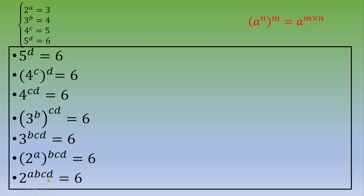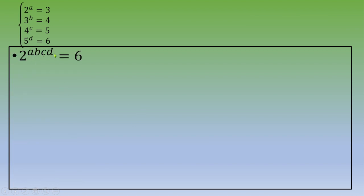So 2^(abcd) = 6. Now we want to know the value of abcd. We know a function which transforms a power into a parameter: this is the log function. We can apply the log function because we have positive numbers. So we have log(2^(abcd)) = log(6).